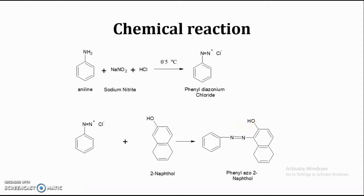The principle involved in this particular synthesis is diazotization, where sodium nitrite and a mineral acid react with each other to form nitrous acid. The nitrous acid then reacts with the amino functional group, leading to the formation of the diazonium salt. Diazotization reaction is thus the principle involved in this particular synthesis. Now, after the chemical reaction, we will see how to perform this practical — that is, the procedure involved in the synthesis of phenyl azo-2-naphthol.